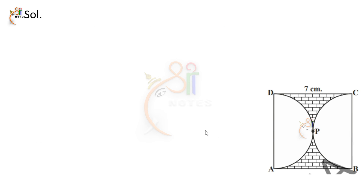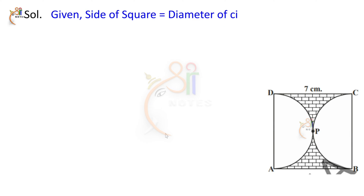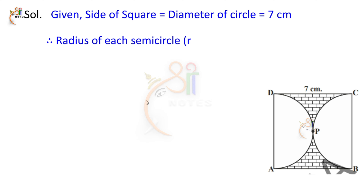The side of the square is equal to the diameter of the circle, which is equal to 7 centimeters. So the radius of each semicircle is equal to D by 2, and the D value is equal to 7 centimeters, so radius equals 7 by 2.